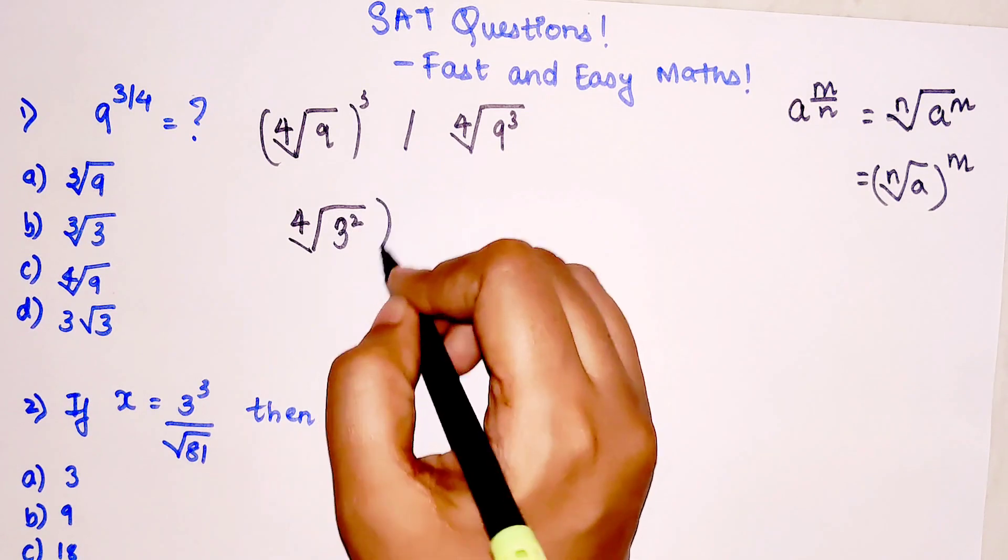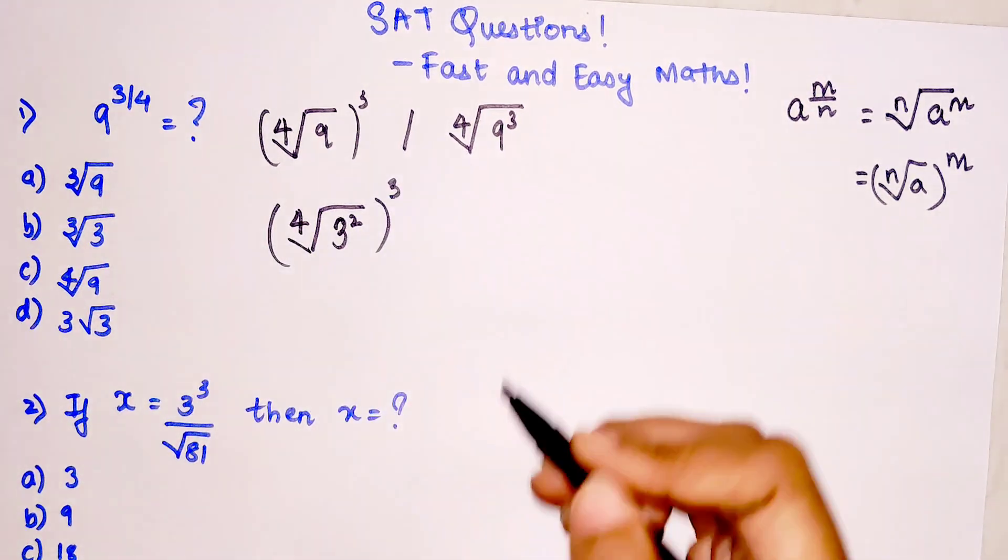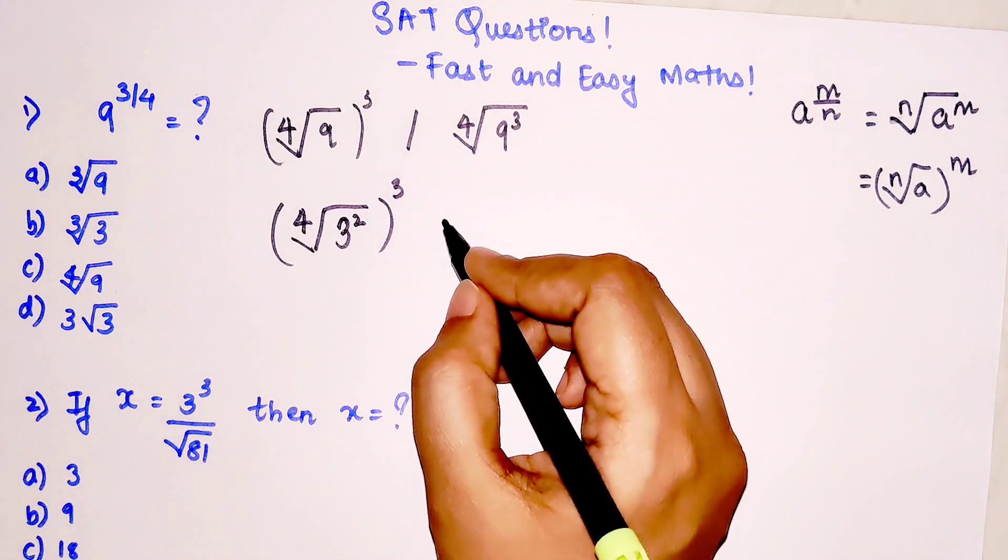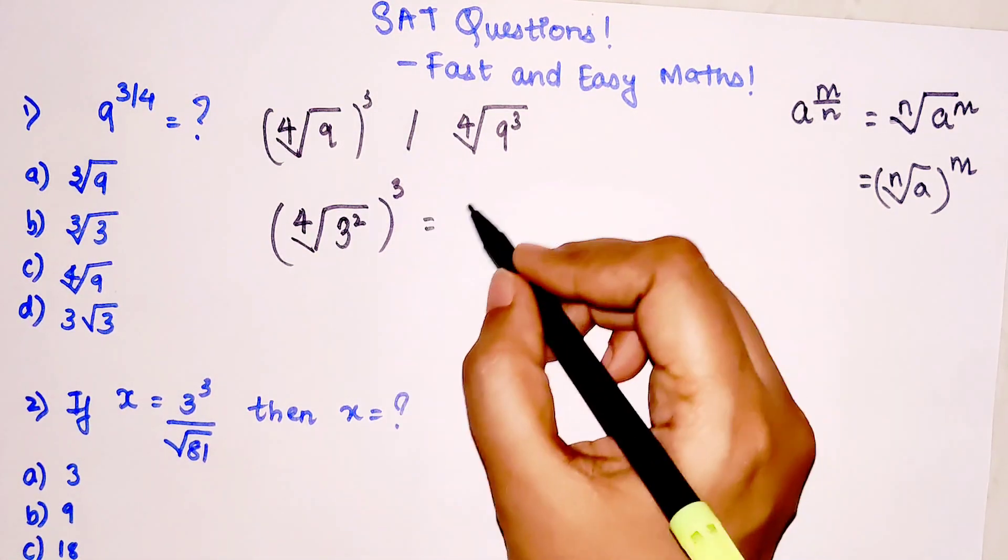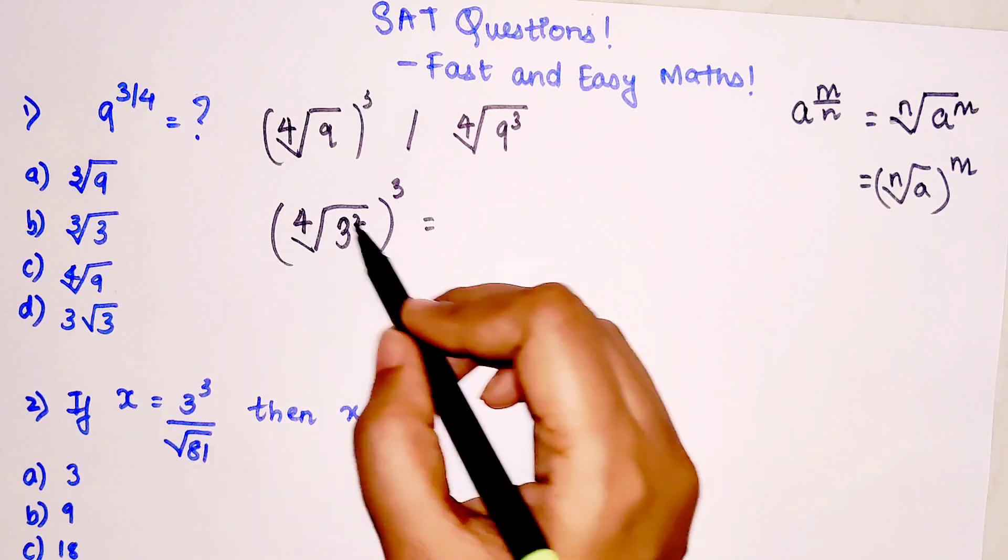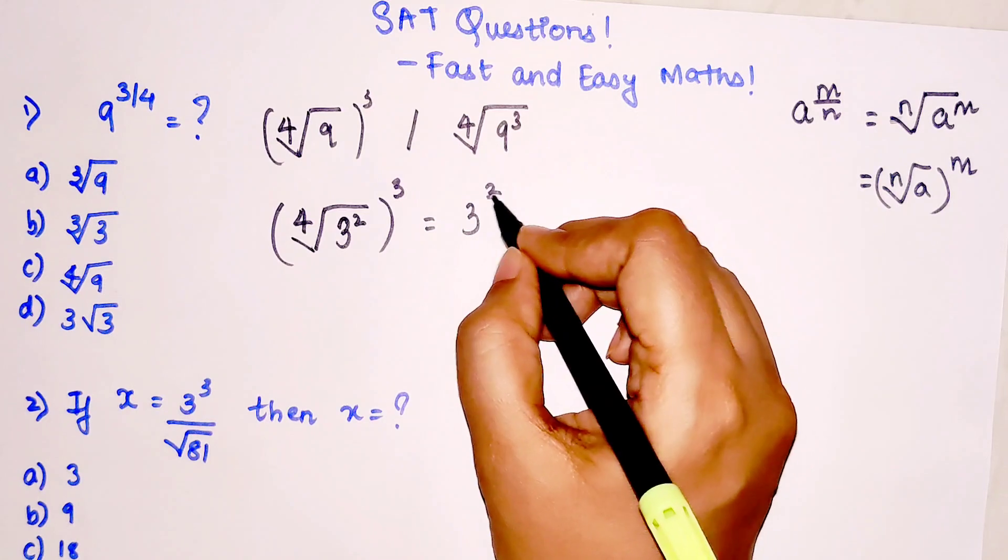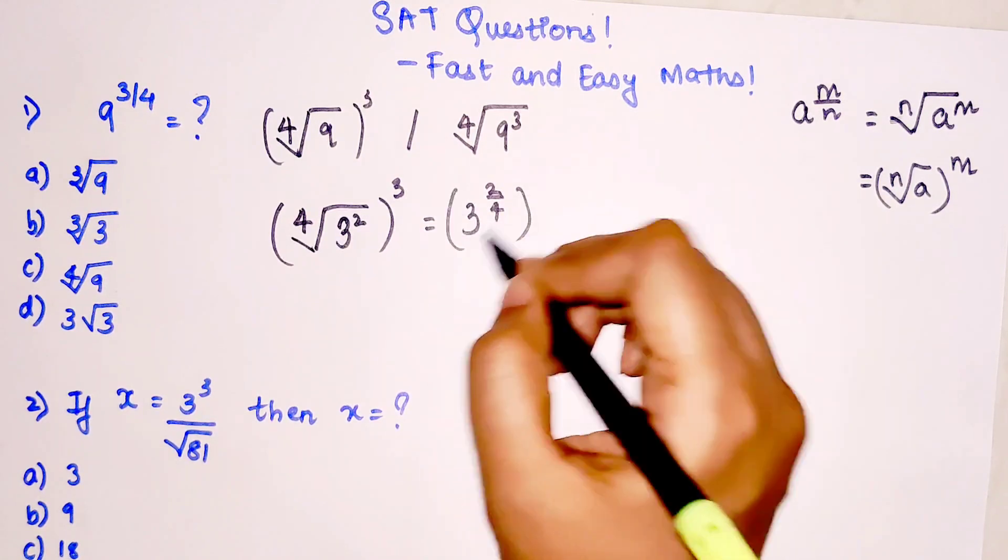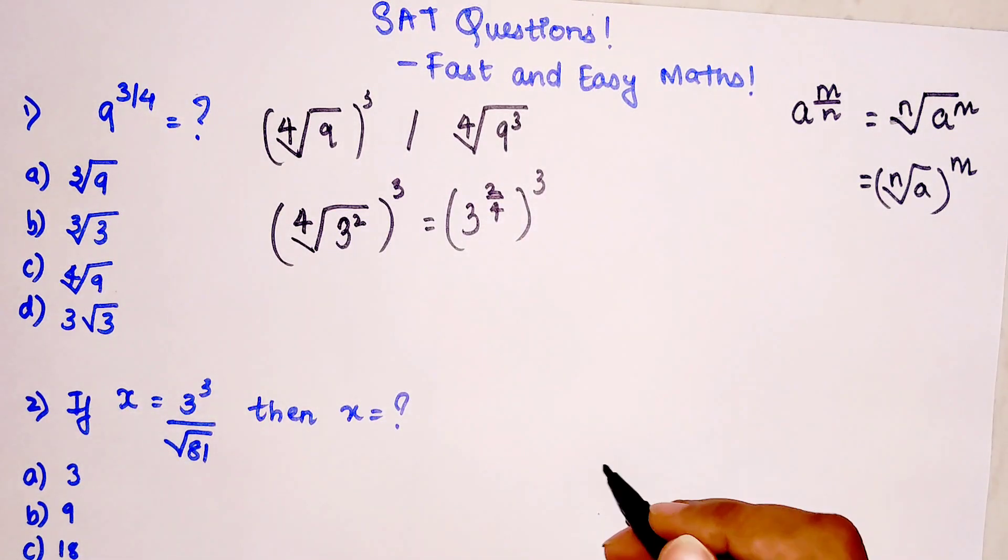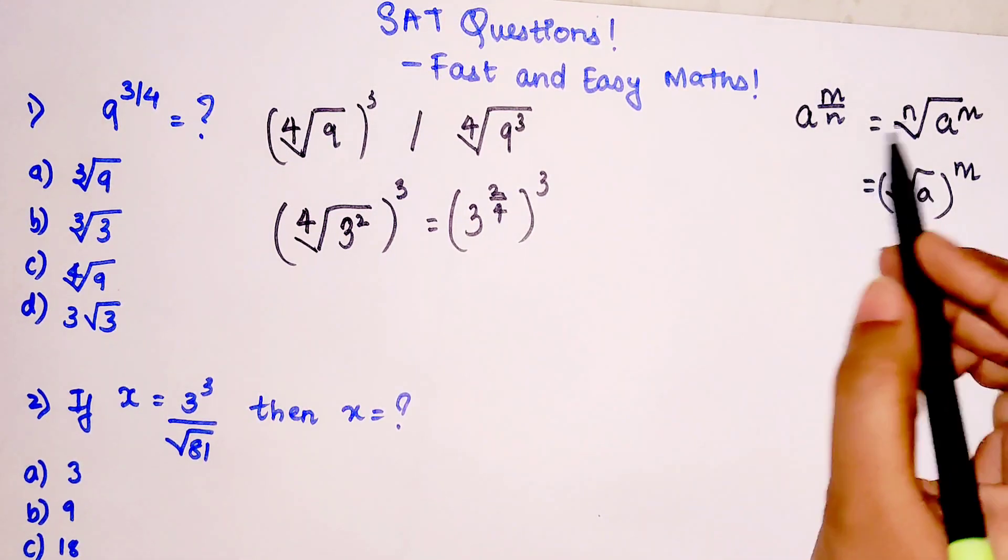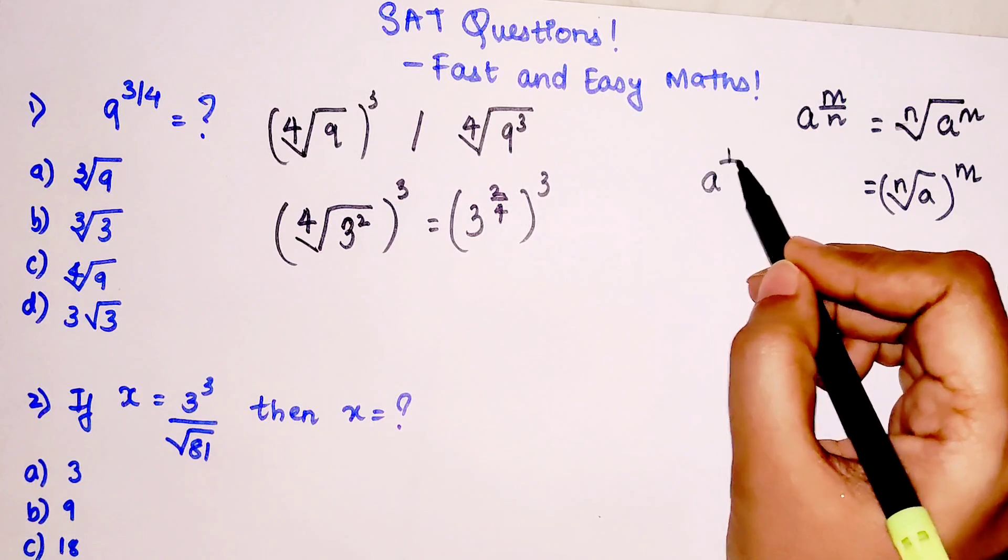So then what we get over here is - now let's take this fourth root in the denominator. So this can be very well written as 3 raised to 2 upon 4, the whole raised to 3.